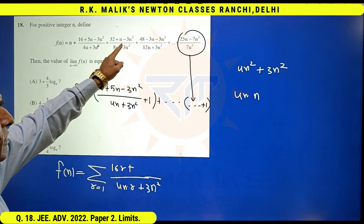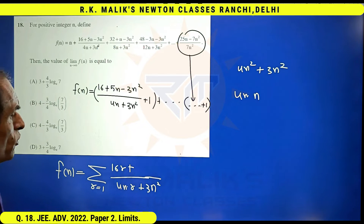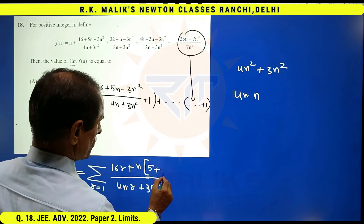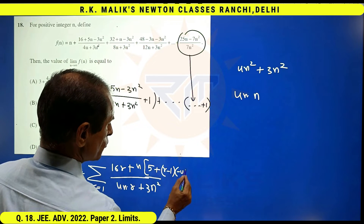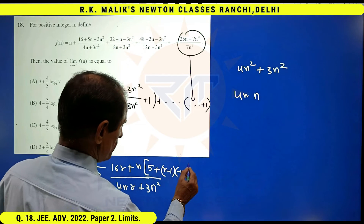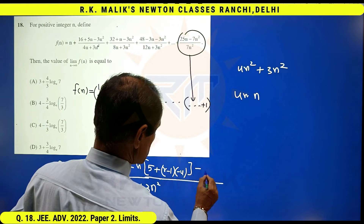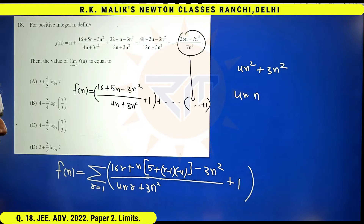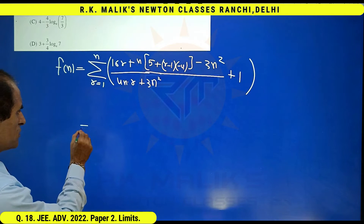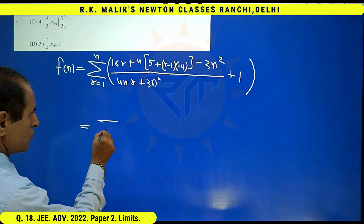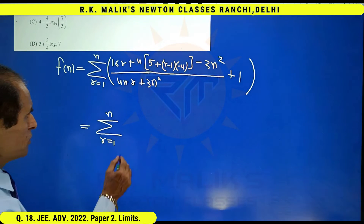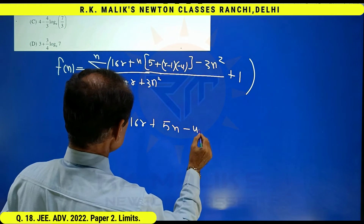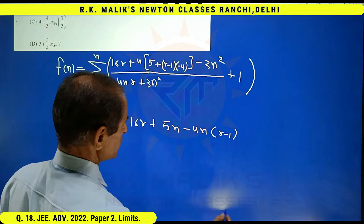Continuing the numerator, we add 5n plus terms involving (r − 1) · (−4), giving n·(5 + r − 1·(−4)), then minus 3n² plus 1. So the full general term numerator simplifies, with r varying from 1 to n. This gives sigma from r = 1 to n of (16r + 5n − 4n(r−1)) over (4nr + 3n²).